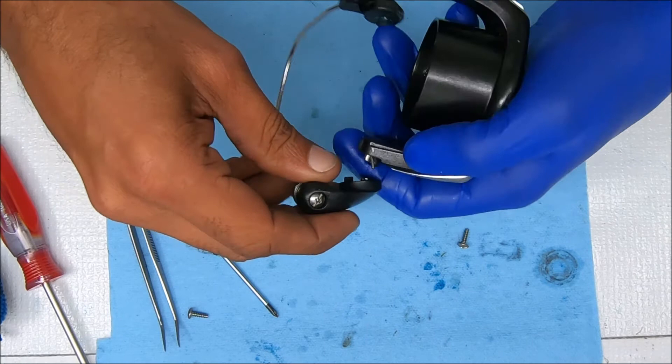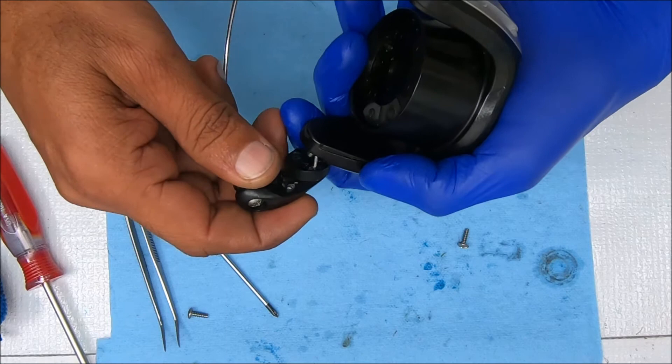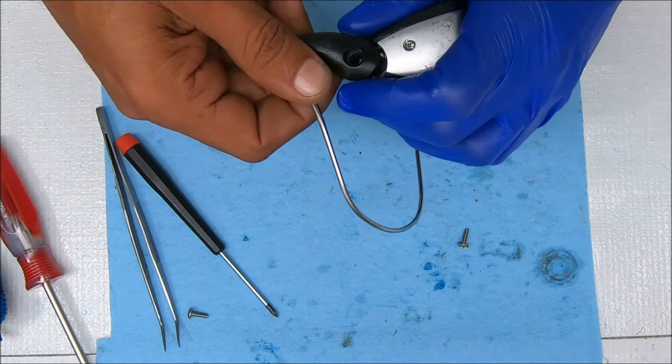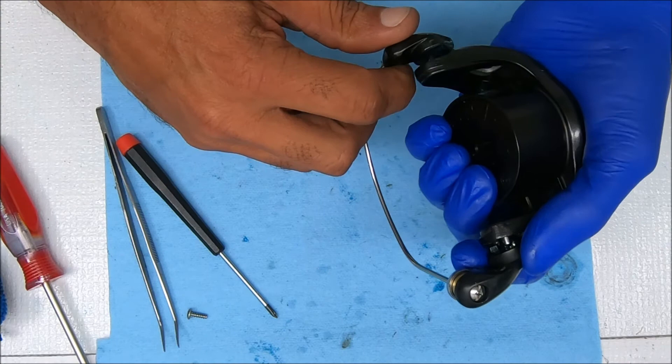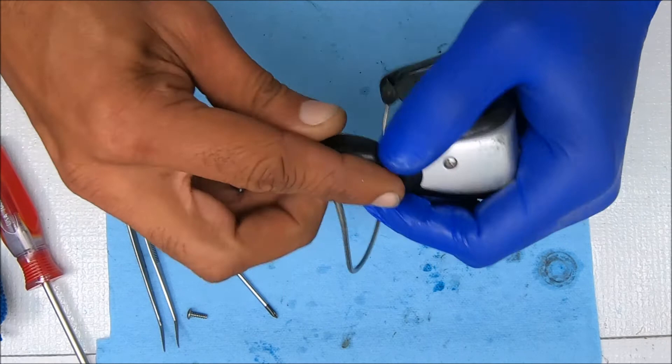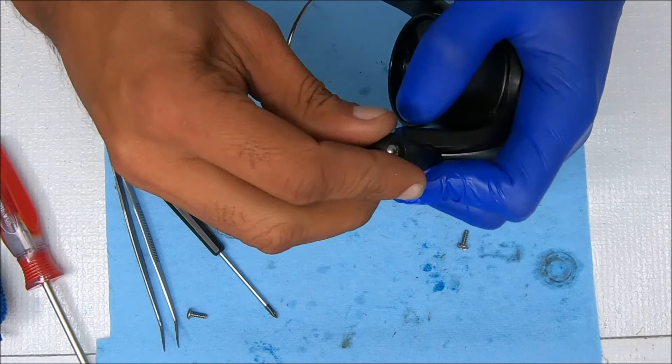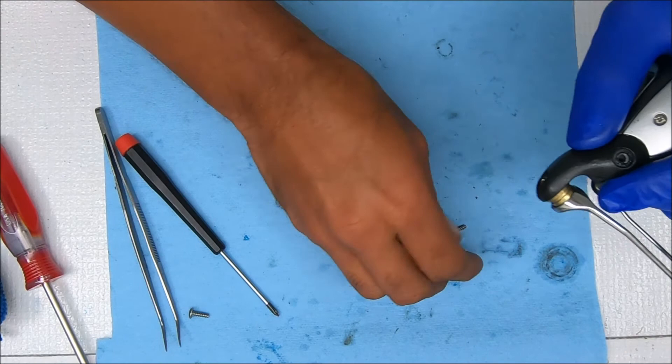All right, and now all we have to do is line it up with that hole right there where that cylinder is. And then we're just going to stick it over here. Let's see if we can get that. Good, there we go. That looks good.